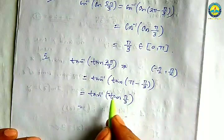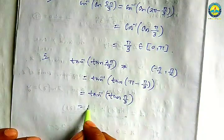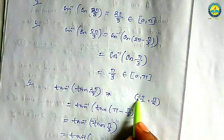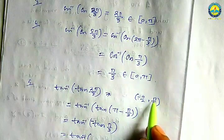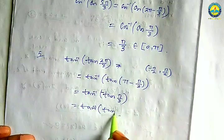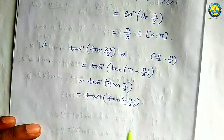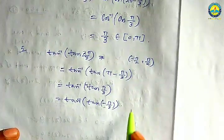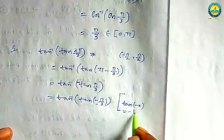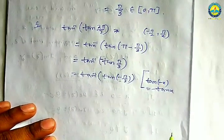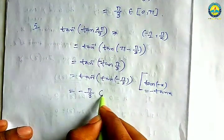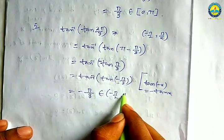Since 2 pi by 3 is not in the principal value range, and the second quadrant is negative, tan inverse tan(2 pi by 3) = minus pi by 3. The value range is minus 90 degrees to plus 90 degrees, so this gives minus pi by 3, which equals minus 2 pi by 3. So the answer is minus pi by 3.